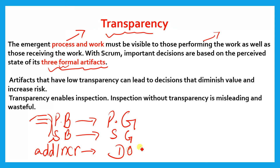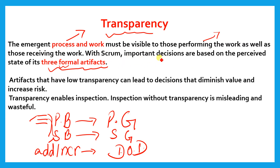The Increment should meet the Definition of Done — DOD means Definition of Done, which is according to specification. For example, if a tailor makes our dress, we give them our size as the specification. Similarly, whatever we do in a sprint should follow some specification and requirements. These are the three formal artifacts. Important decisions in Scrum are based on the perceived state of these three formal artifacts.